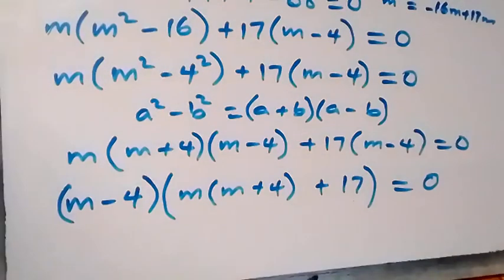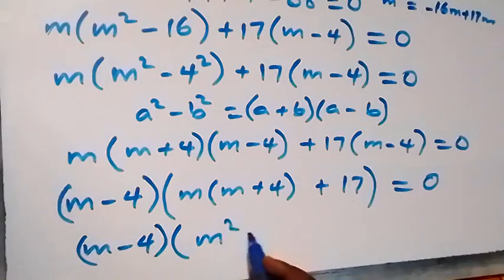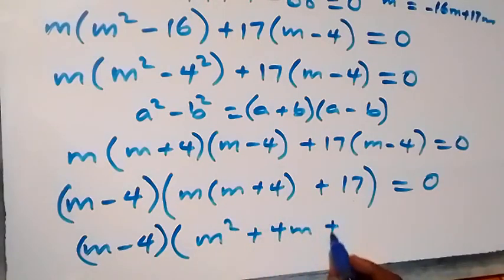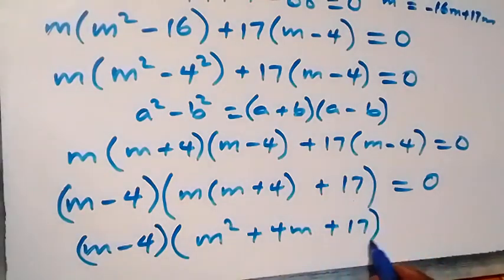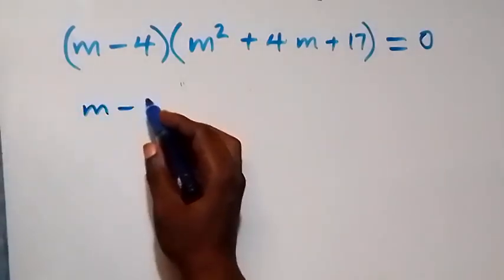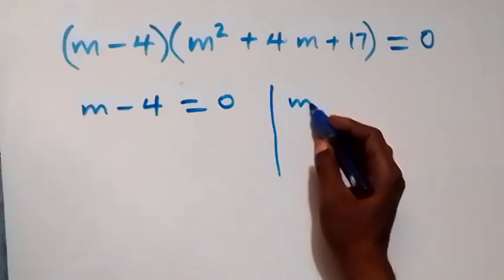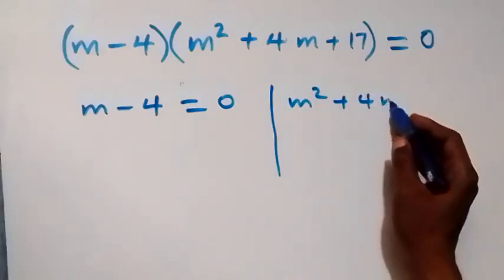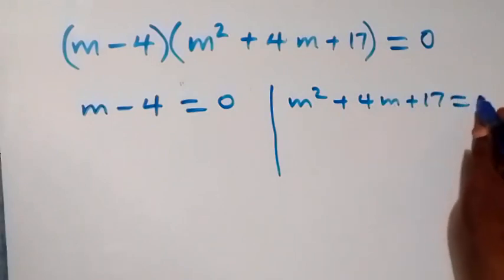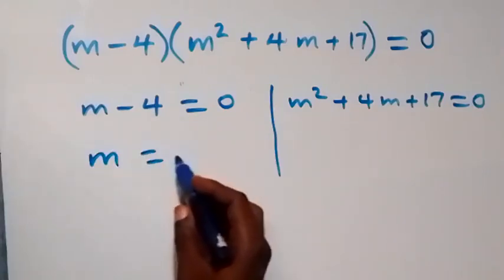Opening the bracket gives m minus 4 times bracket m squared plus 4m plus 17, equals zero. From this we have two cases. The first: m minus 4 equals zero, which gives m equals 4.